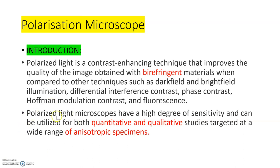Polarized light microscopes have a high degree of sensitivity and can be utilized for both quantitative and qualitative studies, targeted at a wide range of anisotropic specimens. Anisotropy is the property of a substance to show variation in physical properties along different molecular axes. In each molecular axis these substances show different physical properties, and such substances are called anisotropic substances.